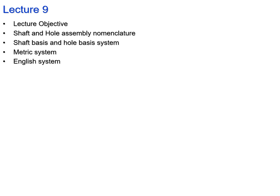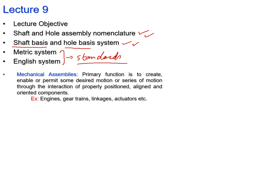Welcome to lecture number nine of this engineering drawing and graphics course. Today's objectives are to cover the nomenclature related to the shaft and hole assembly, the shaft basis system and hole basis system, what the difference between them is, and when to use each. We will also discuss the two standards used for assigning tolerances to shafts and holes.